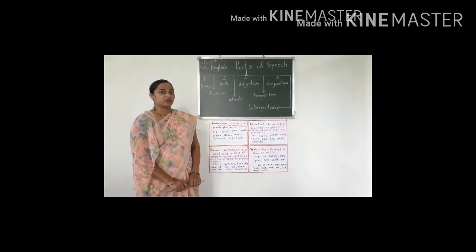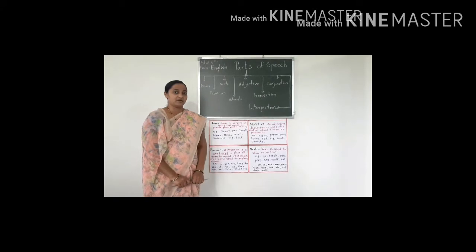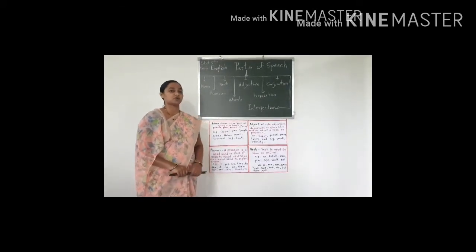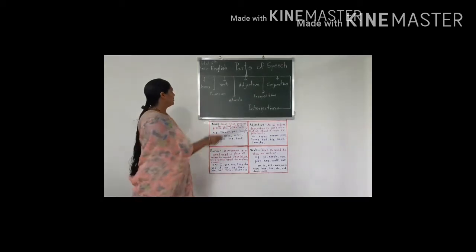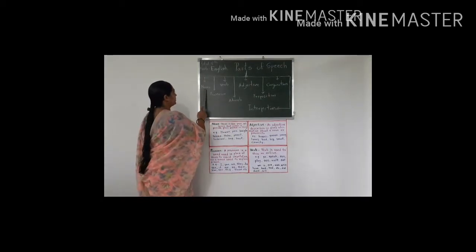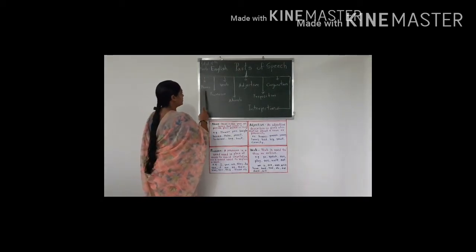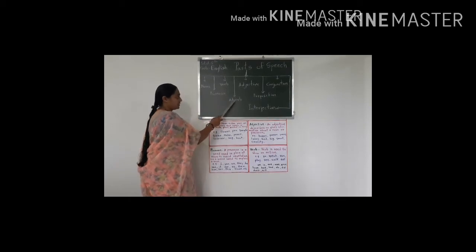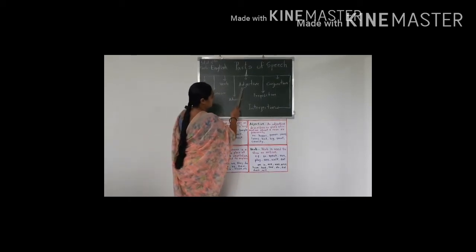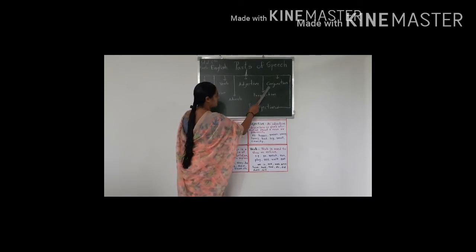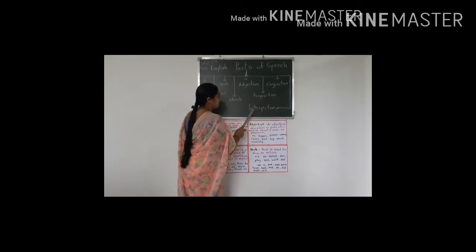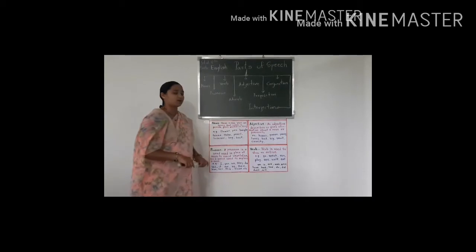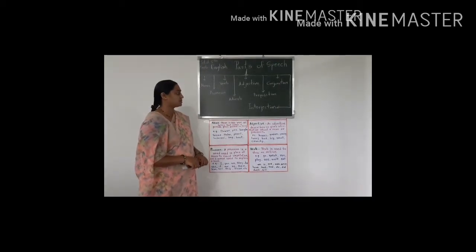Now we are going to learn what are parts of speech. There are eight parts of speech in the English language: noun, pronoun, verb, adverb, adjective, preposition, conjunction, and interjection. All these eight words are called parts of speech.